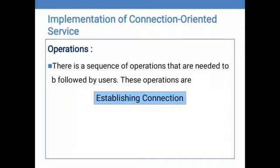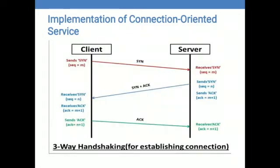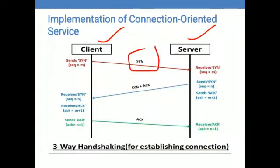When establishing a connection, a direct physical connection is established among the sessions just before transmitting the data. By using the three-way handshake protocol, the connection is established between the source device and the destination device. Here a client-server architecture is considered — the client is the source device and the server is the receiver device. For establishing the connection, the client first sends a SYN (synchronous) message to the server as a request.